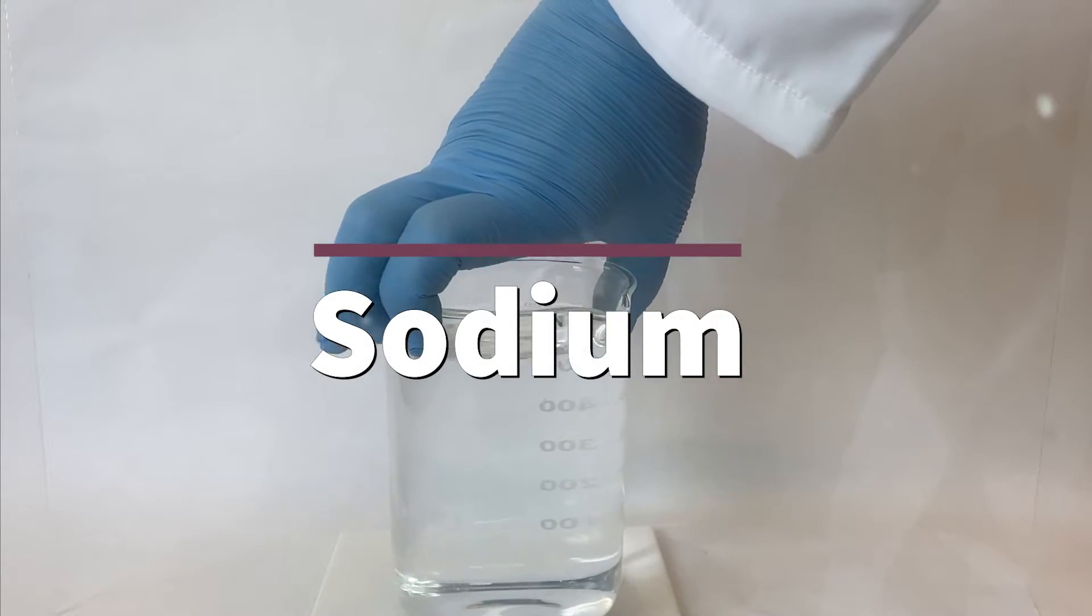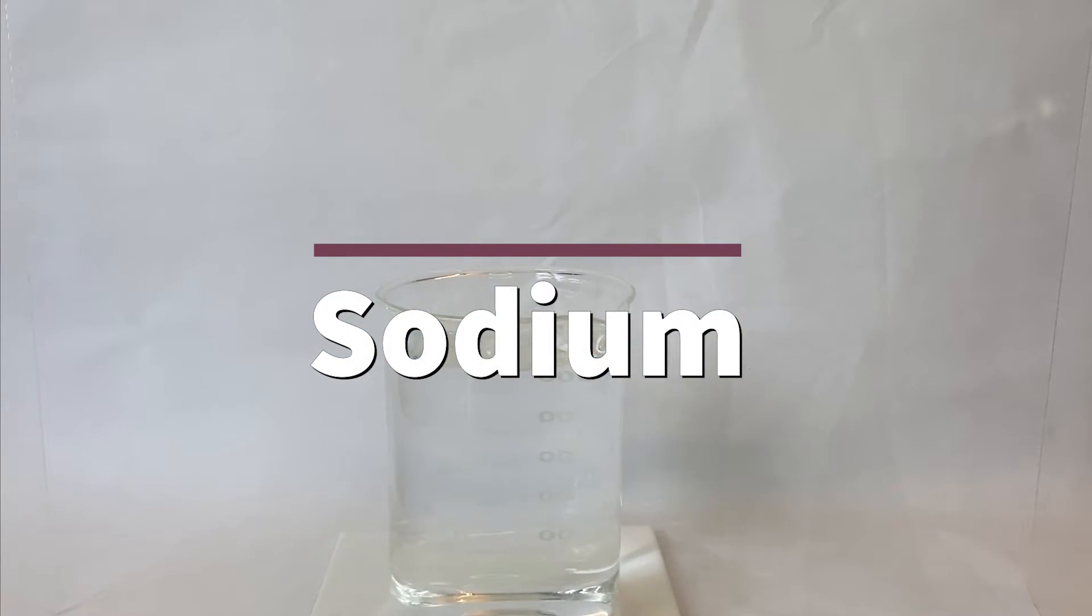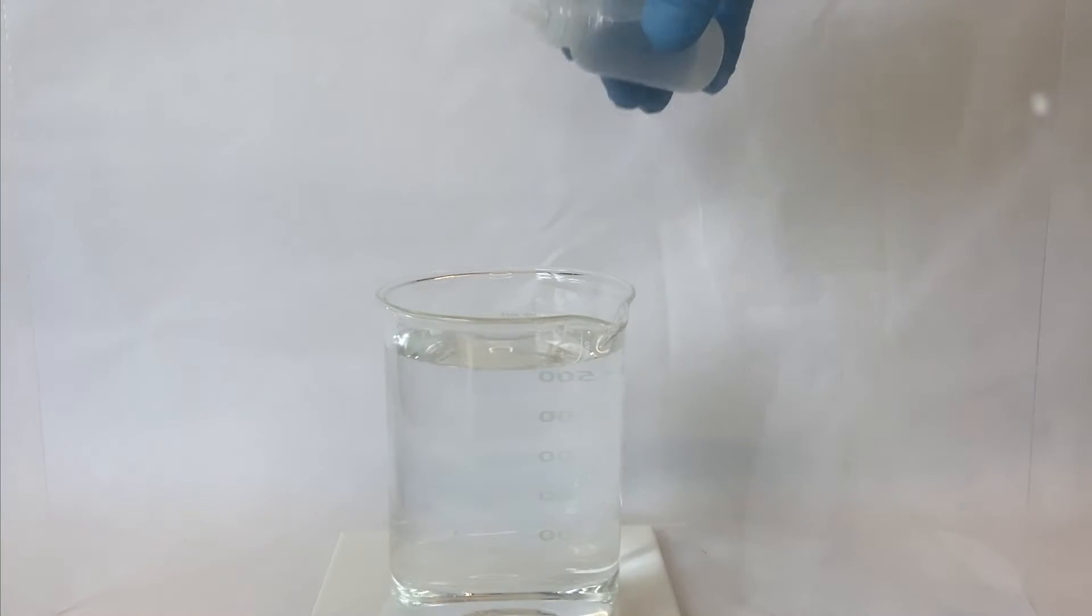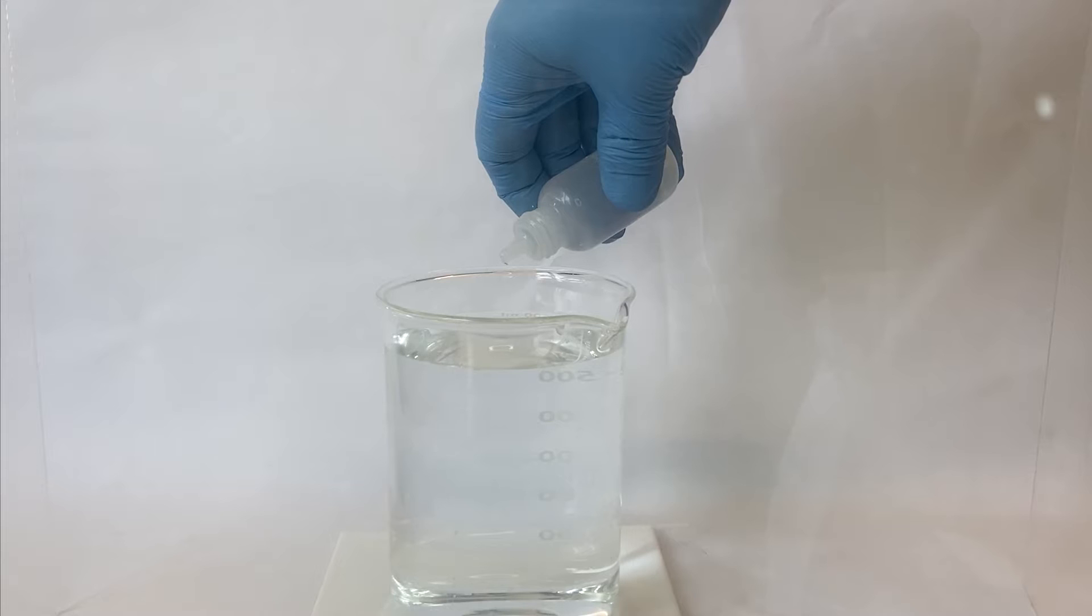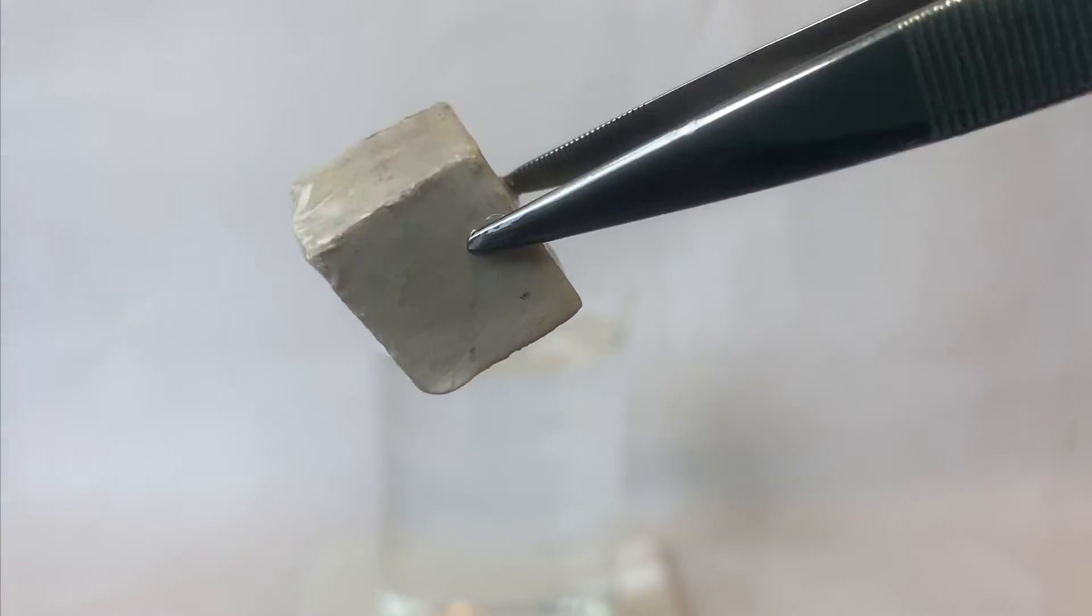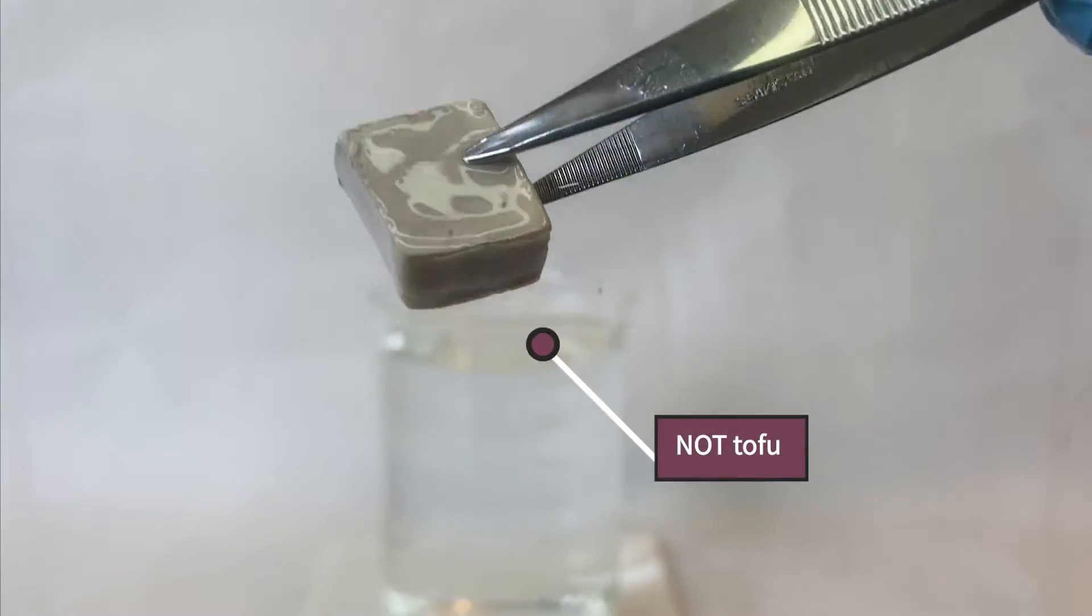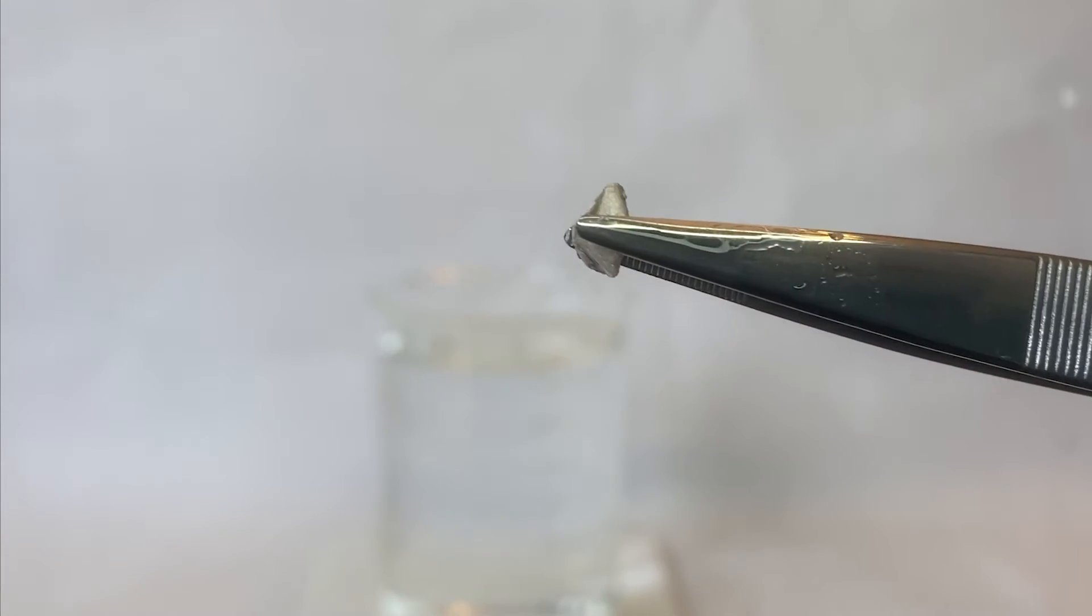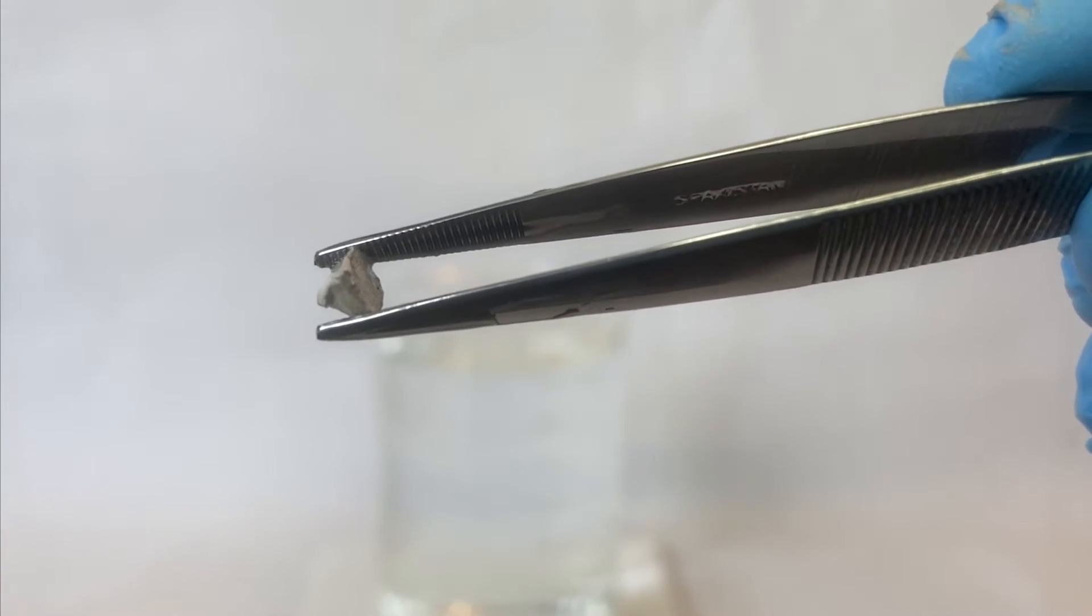Our second demo will be sodium and the setup for this demo is the same. I have a beaker full of distilled water and to that I will add a few drops of phenolphthalein. Not only is the sodium demo really cool, I also think that sodium metal kind of looks like a cube of tofu. That cube of sodium is too big for our demo today, so we're going to use a smaller piece.